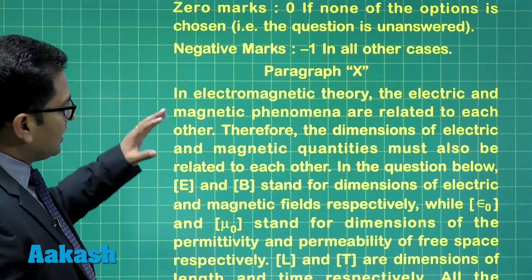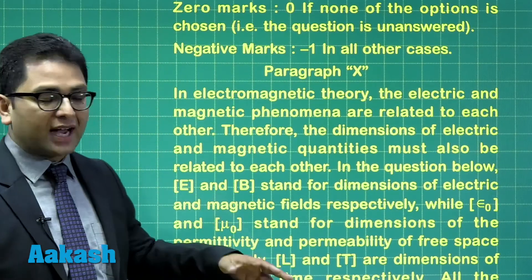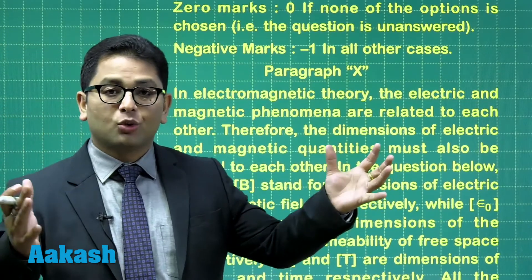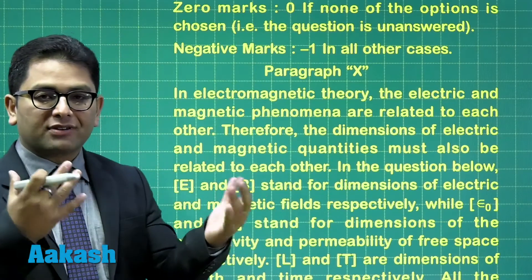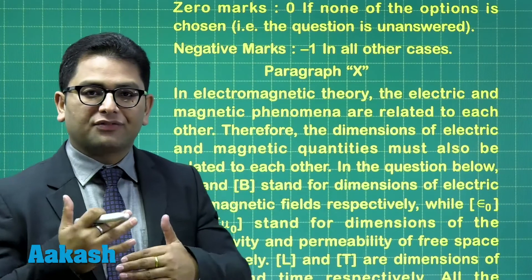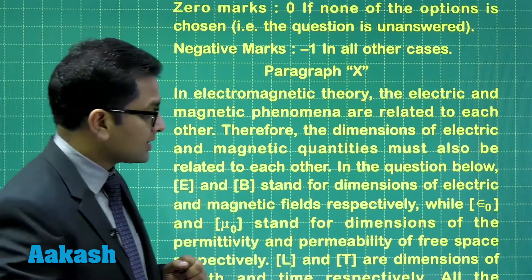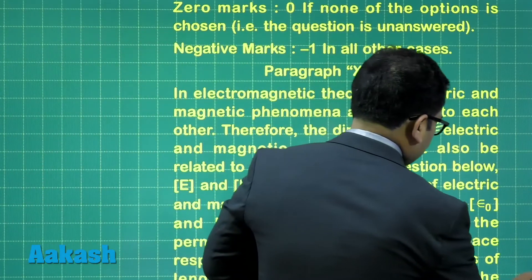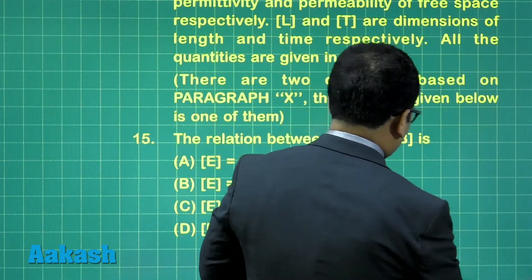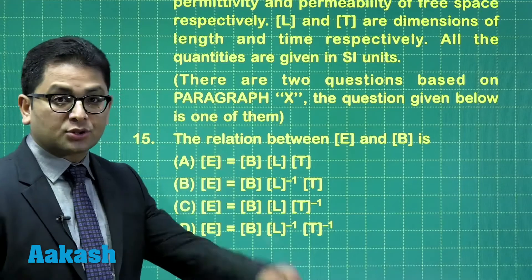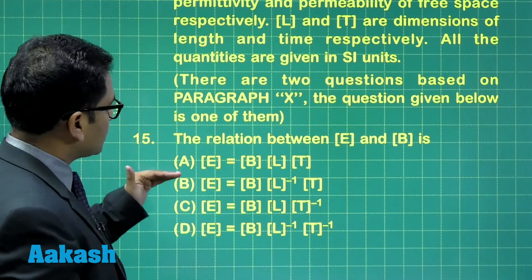Now, the statement of the paragraph - I would not be reading line by line. The statement simply says that we can correspondingly relate electric field, magnetic field, permeability, permittivity into the dimensional format. There's no such information that you can extract from it, so I'll not be going into that. There are two questions associated with this. Question 15 says: